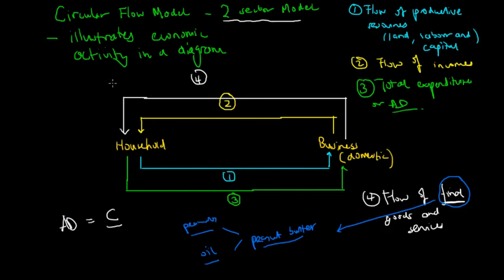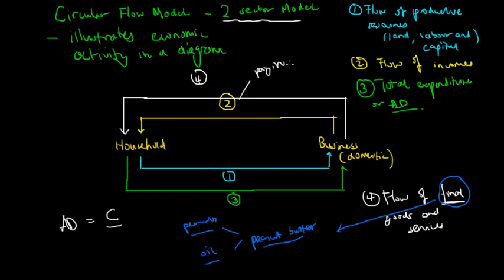Let's recap the circular flow model. Flow one is the flow of productive resources: the household sector supplies resources — land, labour and capital — for use by the business sector. To purchase these resources, businesses have to pay households income. So flow two is the flow of income, where the business sector purchases or demands resources by paying households different incomes.